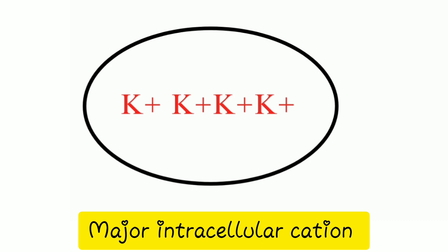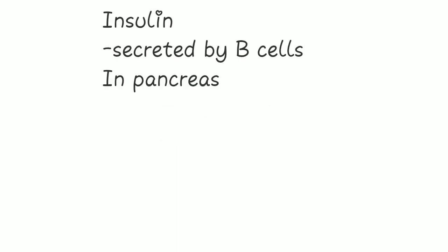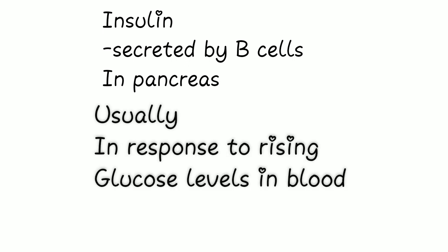Potassium tends to be more concentrated inside the cell, whereas insulin is produced by the beta cells in islets of Langerhans in the pancreas. It's usually secreted in response to increased glucose levels in blood, which may occur after a meal.